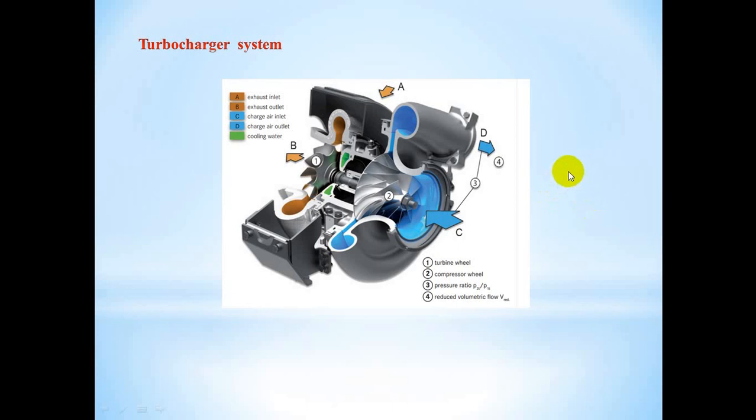In the previous lesson, we talked about the construction of diesel engine. Today, I will explain the first system of the diesel engine. It's called the turbo charging system. We know that increasing the amount of air and fuel into the engine will increase its power and efficiency. We get this increase from a device called a turbocharger, as shown in this figure.